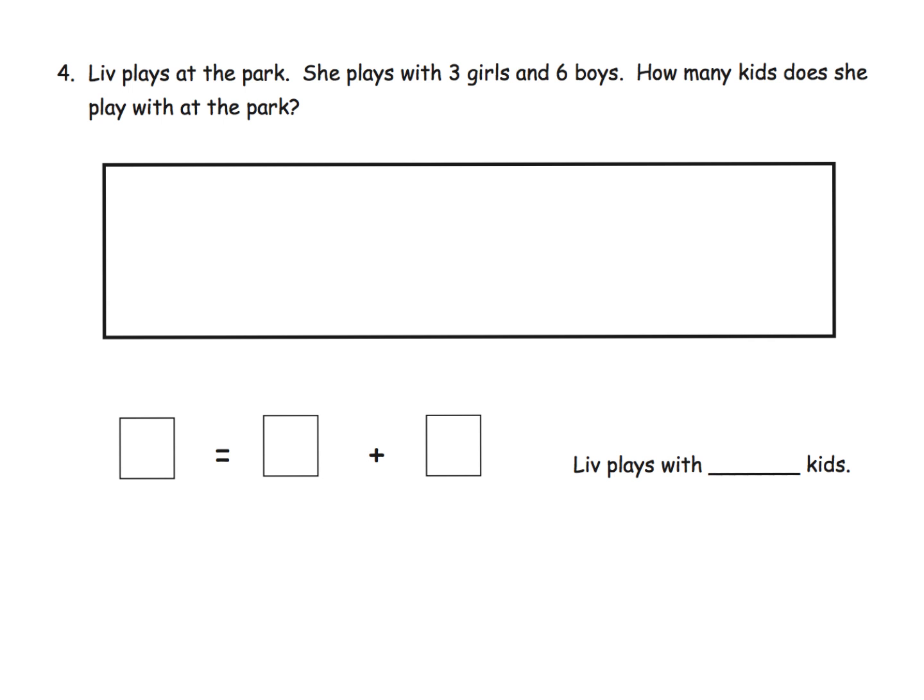So here, students are going to continue connecting real life stories with the mathematics and the picture that's related. So we see that Liv plays at the park, and she plays with three girls and six boys. I'm going to underline that. And then how many kids does she play with at the park?